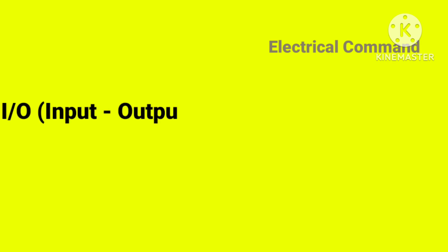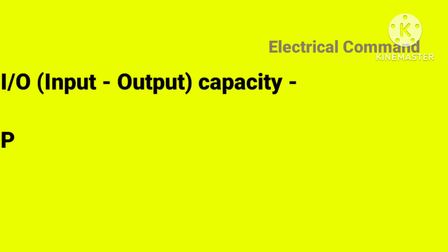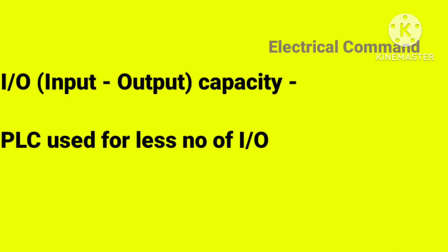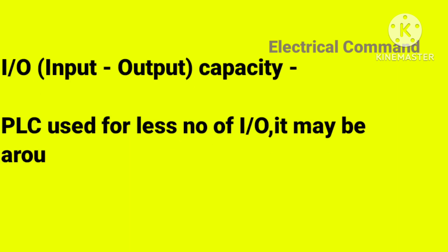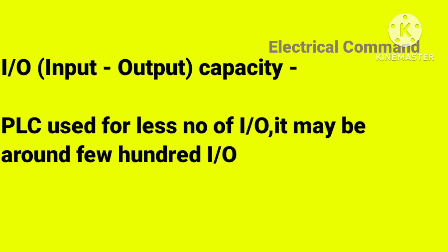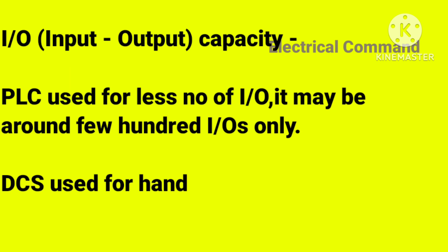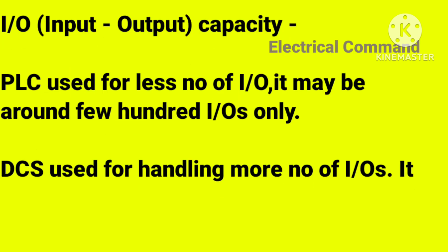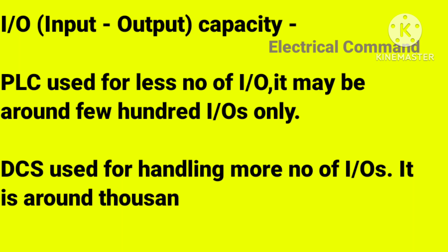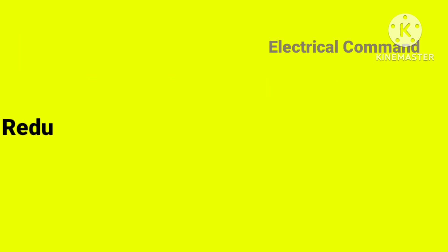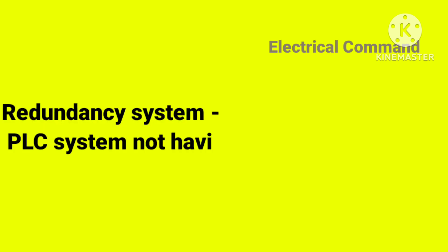Input/Output capacity: PLC is used for a fewer number of inputs and outputs — around a few hundreds of IOs only. DCS is used for handling more IOs, around thousands of IOs.